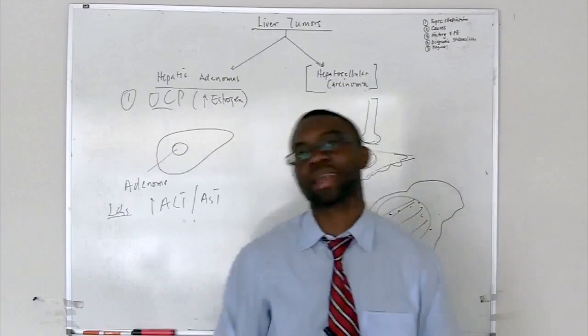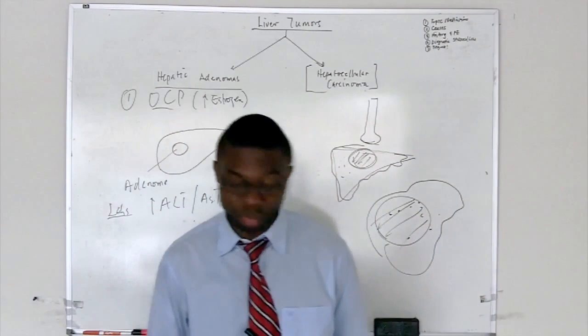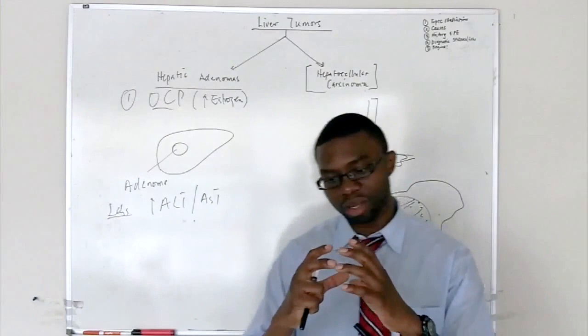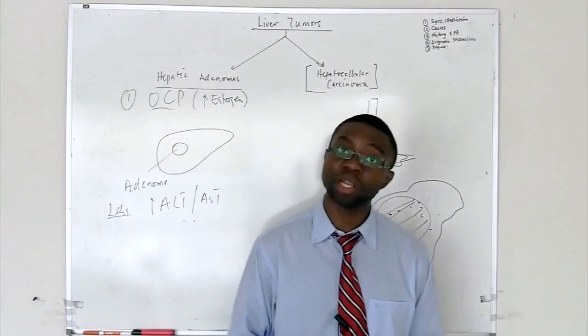Now, there's not much we can do because we can give them chemo. But, the best way to actually do this is to resect it. If the liver cancer is resectable, you want to resect it. But, you can also do a liver transplant. You give them a new liver. You have to put these guys on transplant list.